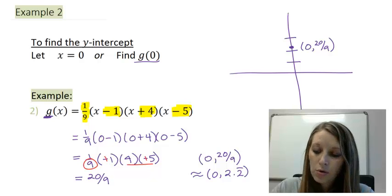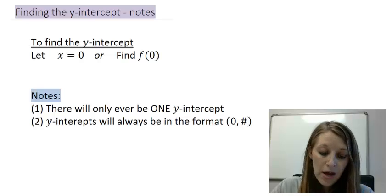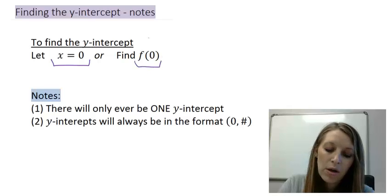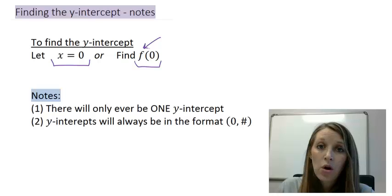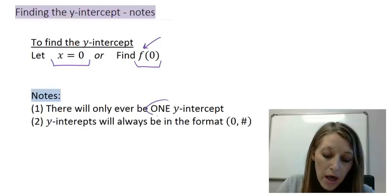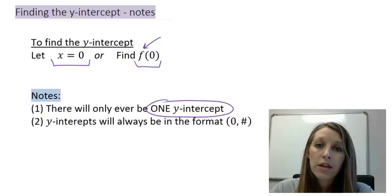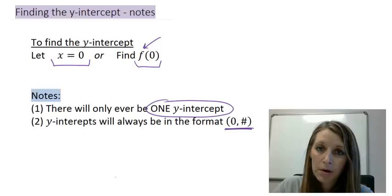Some notes to make about y-intercepts in general: You always find them by letting your x value be 0 or f of 0 if your given function name is f. When you do that, you're only ever going to get one y-intercept. You should never have more than one. Now, these are ordered pairs that intercept the y-axis, so they should always come in the format of (0, #).